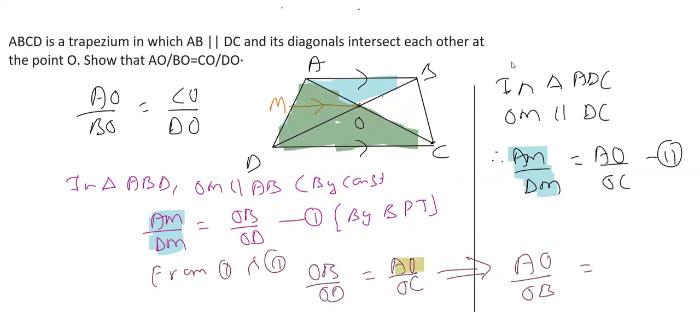So in alternando, what we're doing is substituting or swapping these. We can write AO upon OB is equal to CO upon OD. You may simply write by cross multiplication. This will be your result.